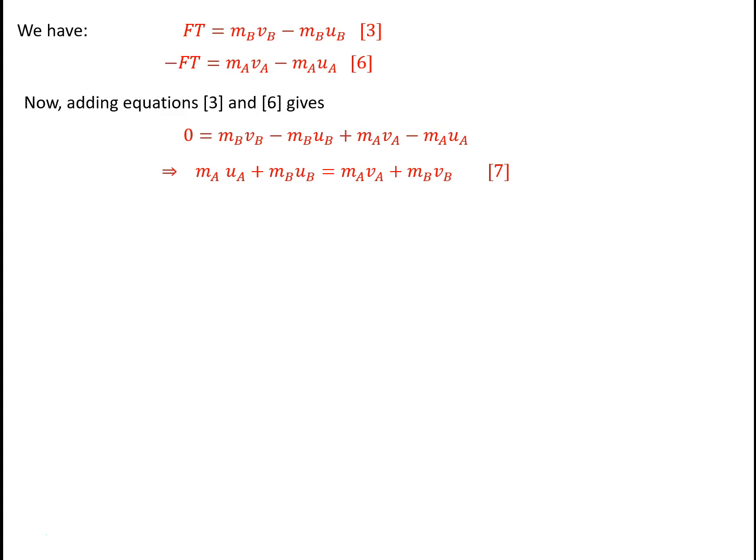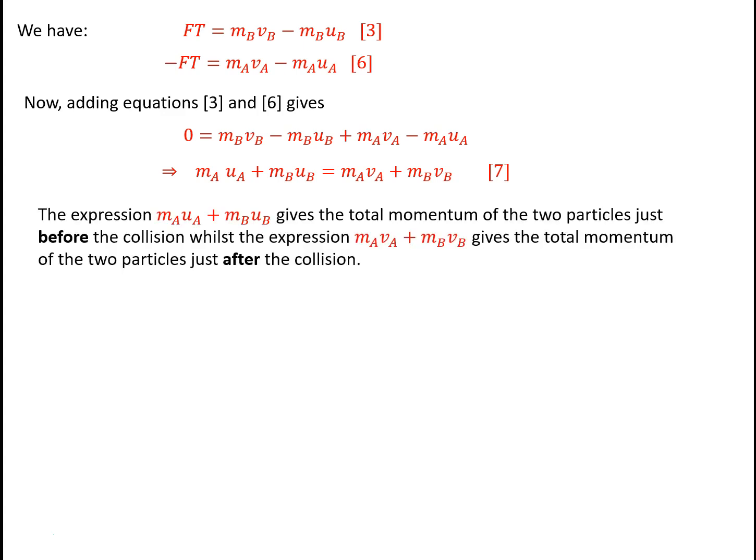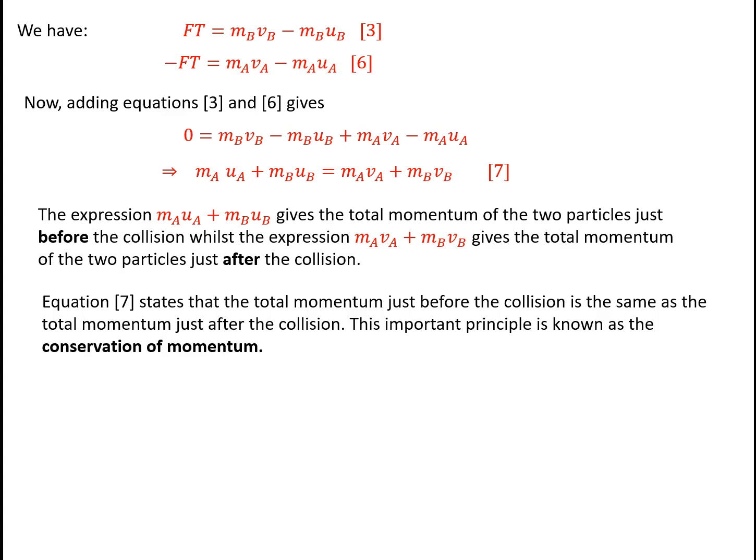Now MA·UA is the initial momentum of A, MB·UB is the initial momentum of B. On the right-hand side, MA·VA is the final momentum of A and MB·VB is the final momentum of B. So the left-hand side is the total initial momentum before the collision, and equation 7 tells us that the total momentum just before the collision is the same as the total momentum just after the collision. This important principle is known as the conservation of momentum.